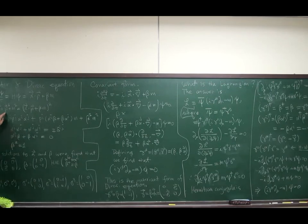And that must be the same as p squared plus m squared. That gives alpha i, alpha j, plus alpha j, plus alpha i must be 2 times the Kronecker delta. And linear term in momentum must vanish, so that alpha i and beta must anti-commute.